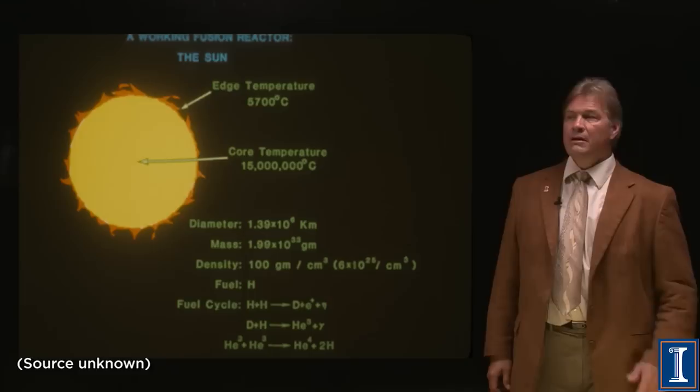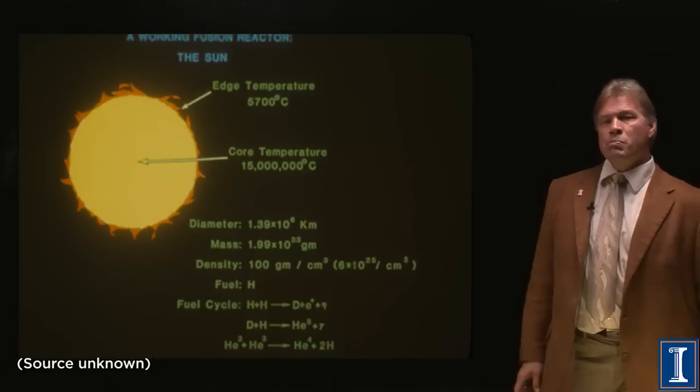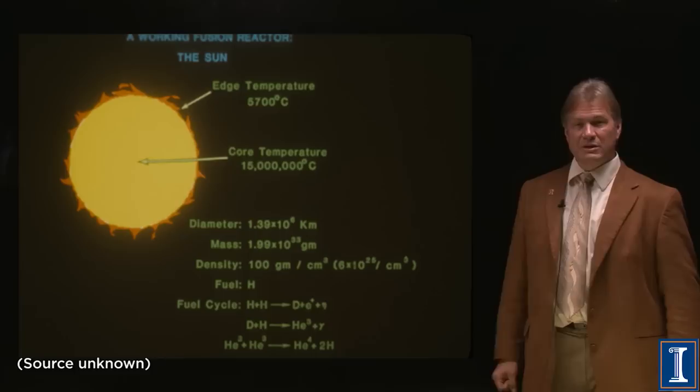It also, besides density, needs to be hot. And the Sun is 15 million degrees. Thinking that steel melts at maybe 2,500 degrees, that's really, really, really super hot.